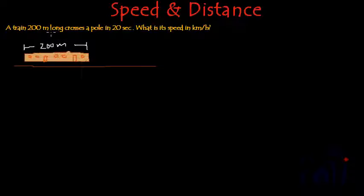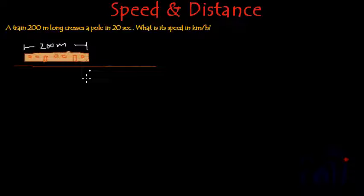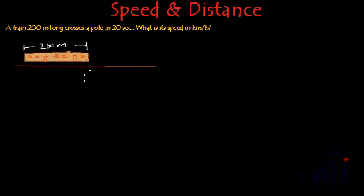A train 200 meters long crosses a pole in 20 seconds. Suppose this is the pole — I am taking the top view of the pole. Since the width of the pole is very small compared to the length of the train, we can represent the pole as a point and will not consider its width, because it is negligible in comparison to the length of the train.